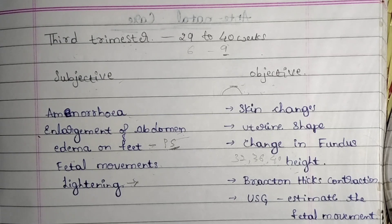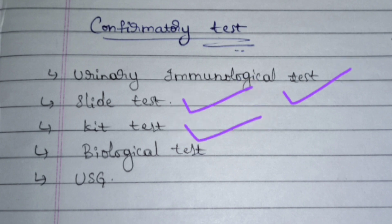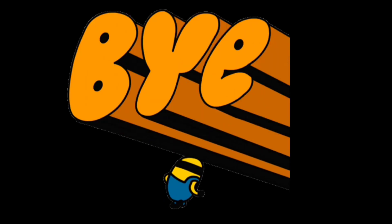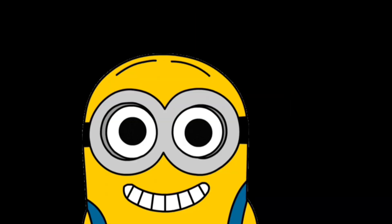Ultrasound (USG) is performed for estimation of fetal movement. The tests performed in the hospital to confirm pregnancy include urinary immunological tests, slide test, kit test, biological test, and USG. Practice questions will be provided at the end of the chapter.